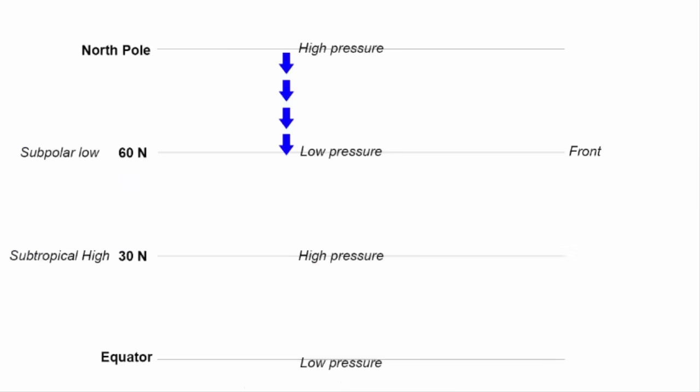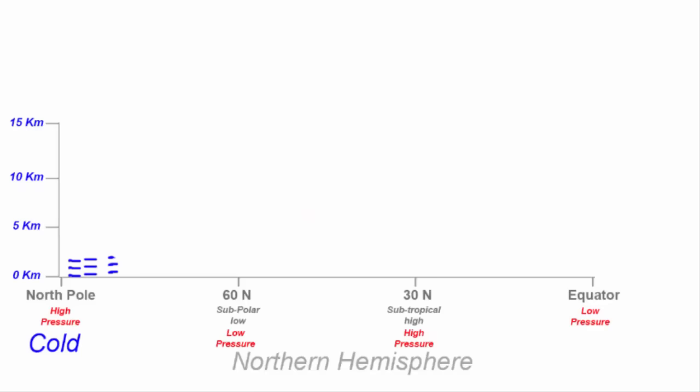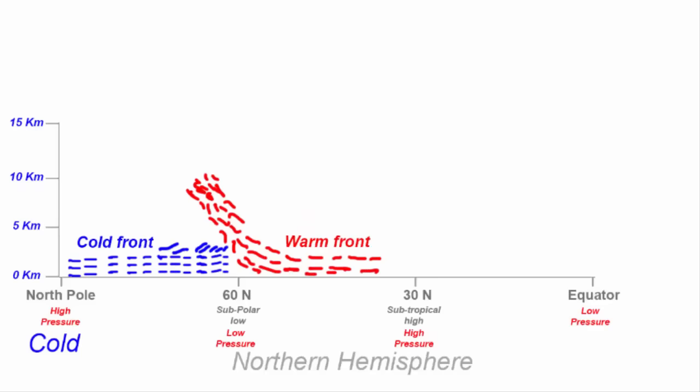When warm air approaches the cold air from the south, it gets slightly deflected towards right due to Coriolis effect. This is what becomes the prevailing westerly winds. Similarly, when cold air from the north pole approaches south, it gets slightly deflected to left. As the warm air approaches the cold front, since the cold air is dense and heavy, it pushes the warm air upward. This region is usually called a low pressure region.